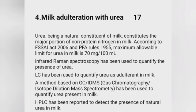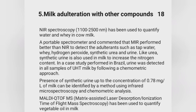Milk adulteration with urea — urea is a natural constituent of milk and constitutes the major portion of non-protein nitrogen. According to the FSSAI Act 2006 and PFA Rules 1955, the maximum allowable limit for urea in milk is 70 mg per 100 ml. Near-infrared Raman spectroscopy has been used to quantify urea. LC and a method based on GC-IDMS (gas chromatography–isotope dilution mass spectrometry) have been used to quantify urea as an adulterant. HPLC has been reported to detect natural urea in milk.